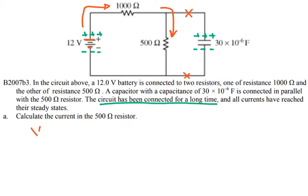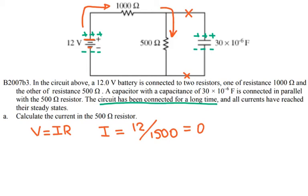To find the current I'll use Ohm's law: V = IR, so current I = V/R = 12 / 1500, which gives me a current of 0.008 amps, or 8 milliamps.